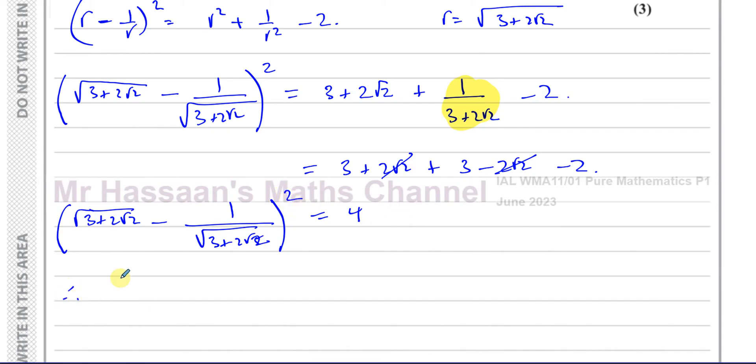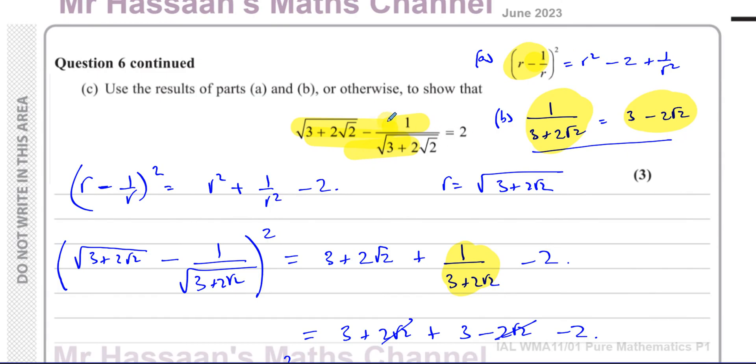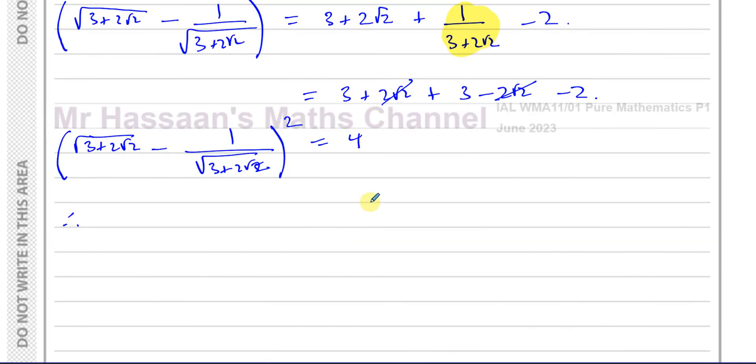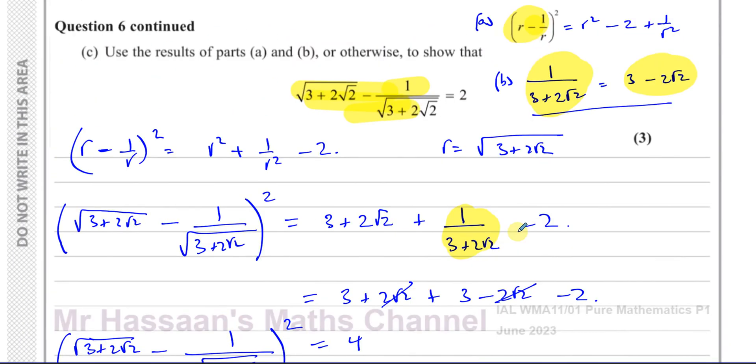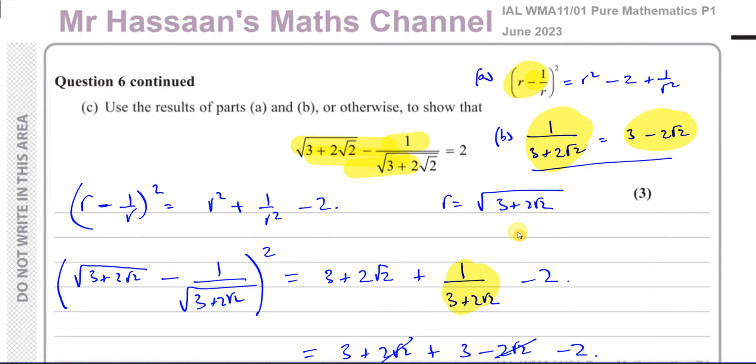So therefore, we have to prove that this is equal to 2, which is the square root of what I've got here. So we can just say that, therefore, the square root of 3 plus 2 root 2 minus 1 over the square root of 3 plus 2 root 2 is going to be equal to 2, taking the square root of both sides. And that's proved what we had to prove. So there's the answer to that question, part 6, 6 part C.